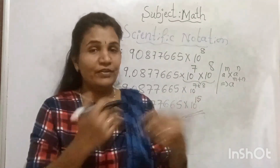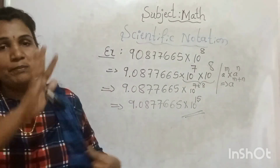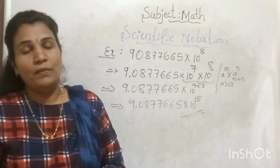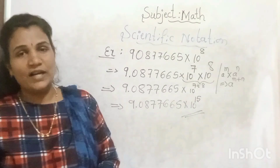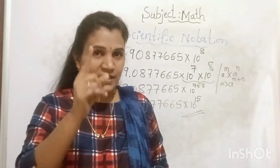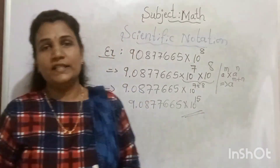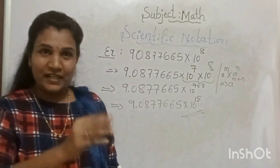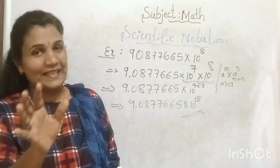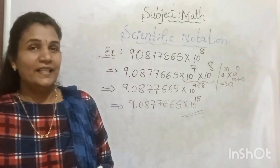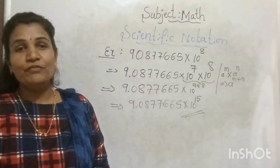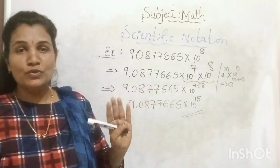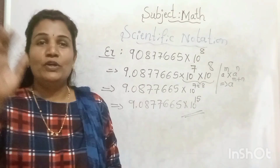These are the two different question types in scientific notation: express a number in scientific notation, or represent a number given in scientific form as standard form. To summarize: put the decimal after the first non-zero digit; move the decimal right or left; count the positions for the exponent of 10. Right-to-left movement gives a positive exponent; left-to-right gives a negative exponent.